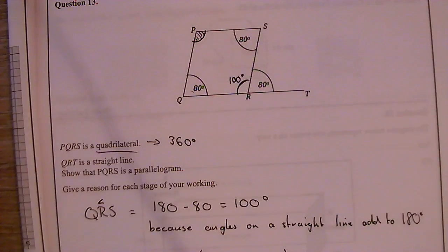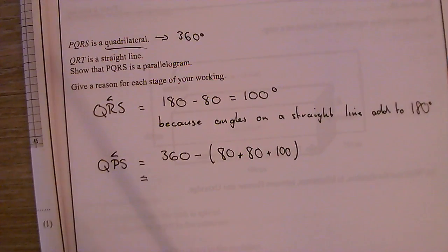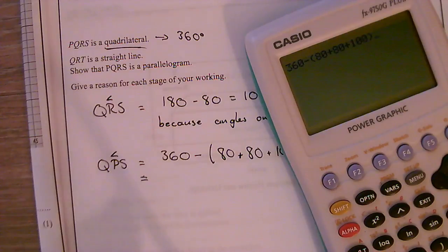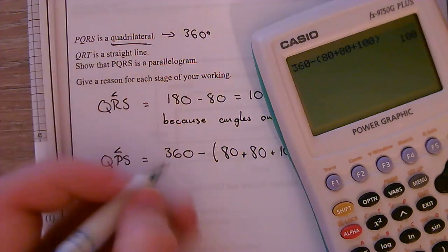OK, again, this is a calculator paper, so save yourself some time, OK, and type that into a calculator. OK, so it's 360, take away, 80 plus 80, plus 100—notice I've put it in brackets so it does that bit first. OK, and you should get the angle 100 degrees.